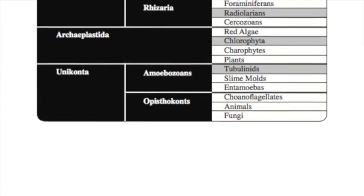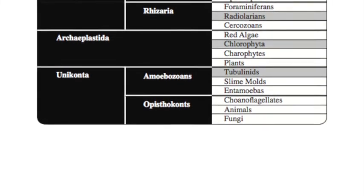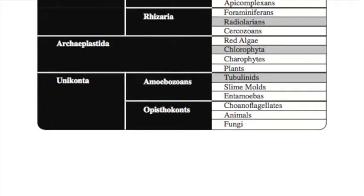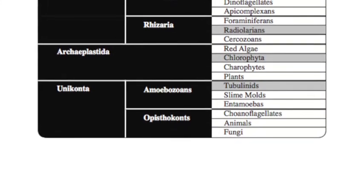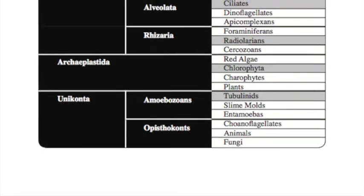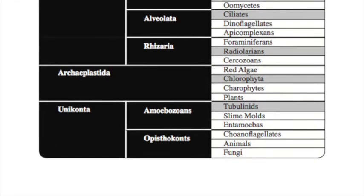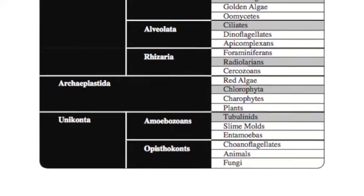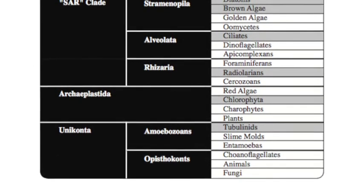The next group we're going to look at are the Archaeplastida. 'Archaea' means ancient, 'plastid' means plastids — so these basically have ancient plastids, in other words they were made by the primary endosymbiosis.